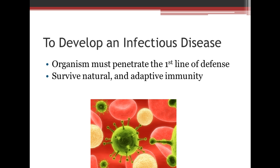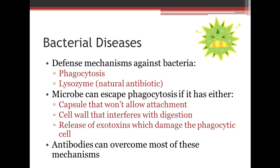In order to develop an infectious disease, the organism must first penetrate the first line of defense and survive the natural and adaptive immunity of the human body. We have certain defense mechanisms against bacteria, including phagocytosis and lysozyme, which is the natural antibiotic found in tears and saliva.